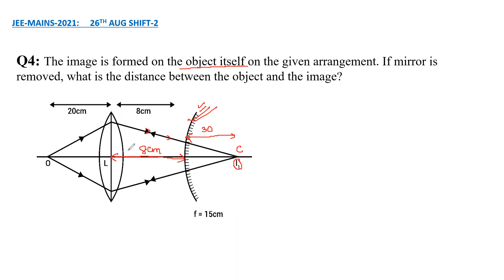If mirror is removed, then directly the image will fall on C and there won't be any retracing of the path of the rays. And therefore the final image will be at C only, which is at a distance of 38 centimeters from the pole of the lens. And therefore the image is at a distance of 38 centimeters and object is at a distance of 20 centimeters. So in total, the object and image are at a distance of 58 centimeters from each other. I hope you understand this.